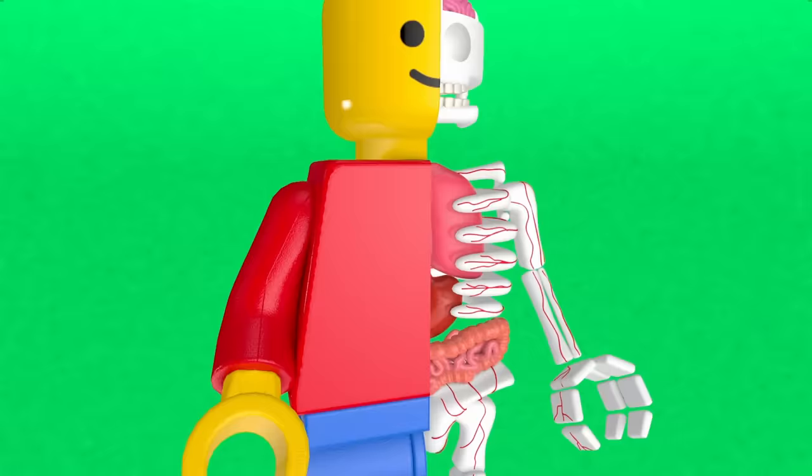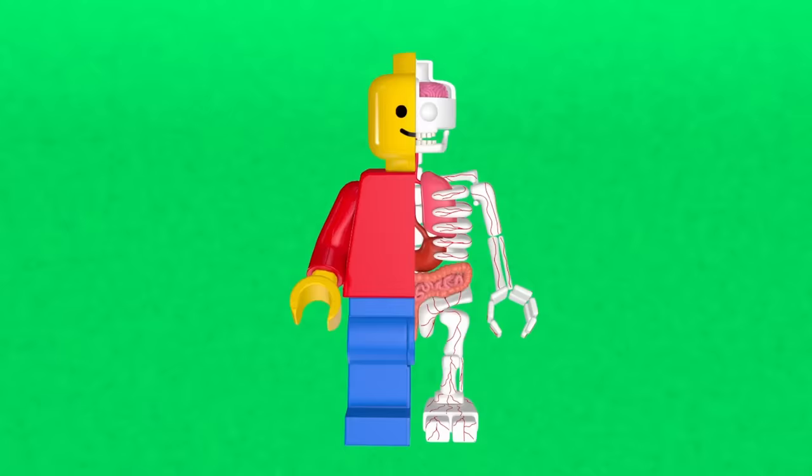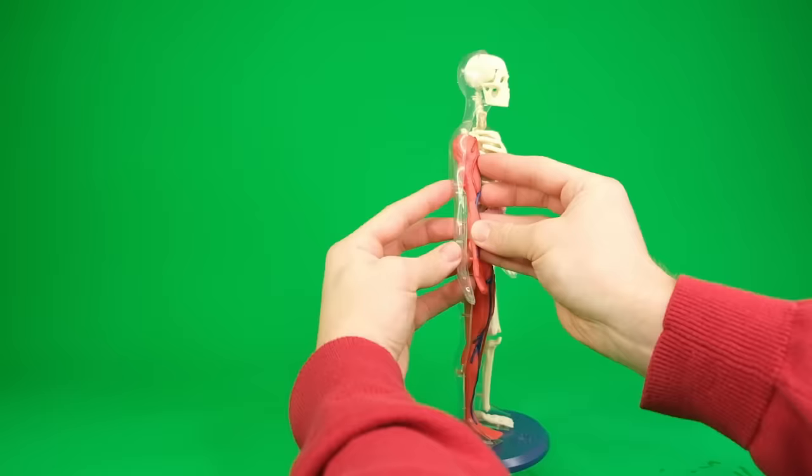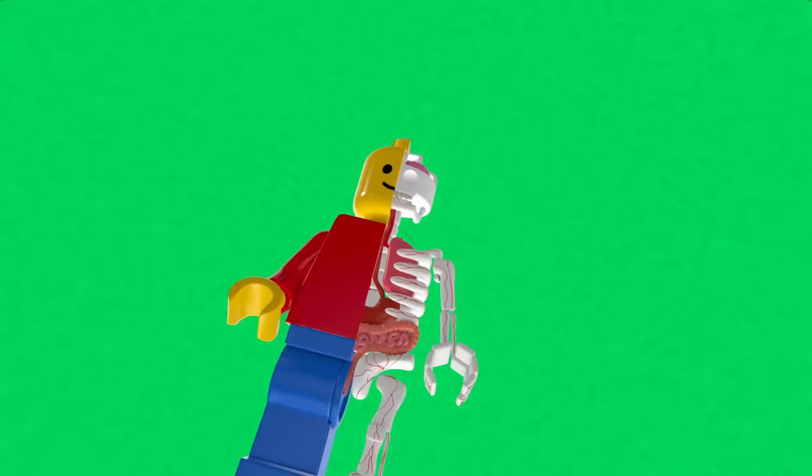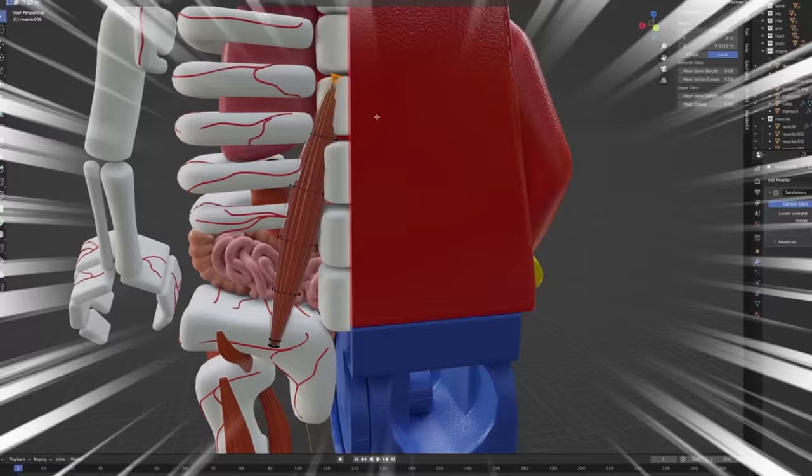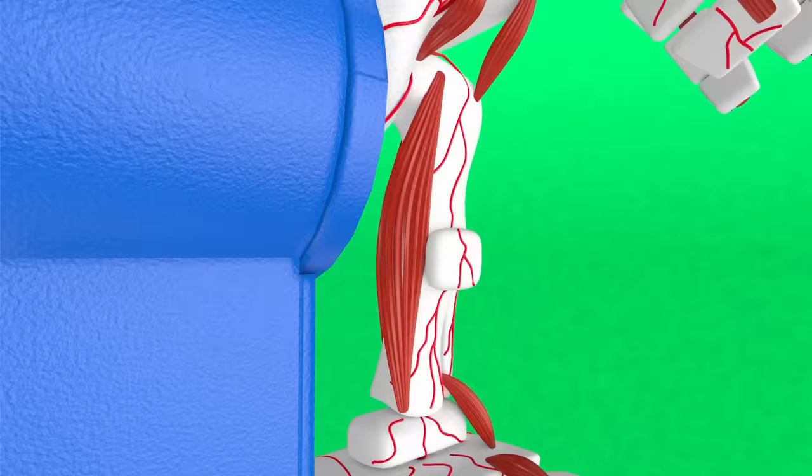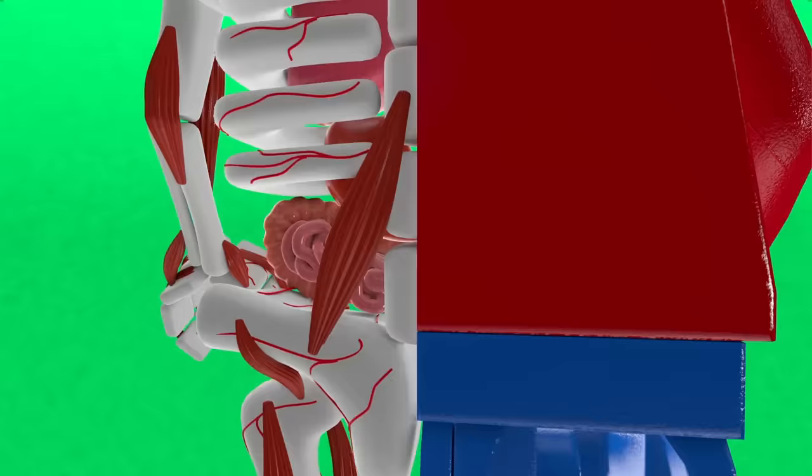Alright so the insides of this minifig are looking pretty good. But I just realized that he can't really move at all. Because he literally doesn't have any muscles. Bro can't even stand up on his own. So let's make his life a bit better and start making some muscles. Like these toe muscles. Some leg and hip muscles. Some core muscles.